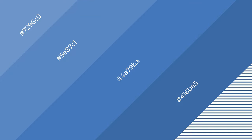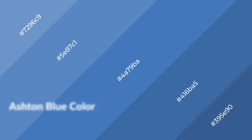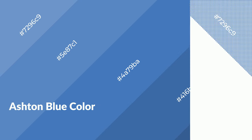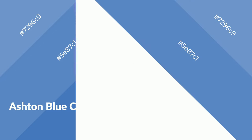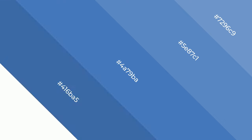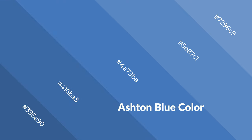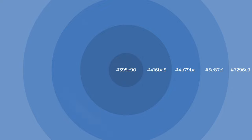Ashton Blue is a cool color and it emits calming, serene, soothing, refreshing, spacious, unwinding, peaceful, and relaxed emotions. Cool colors are like water, ice, sky, grass, soft tones, and snow. You can see them used in baby products.